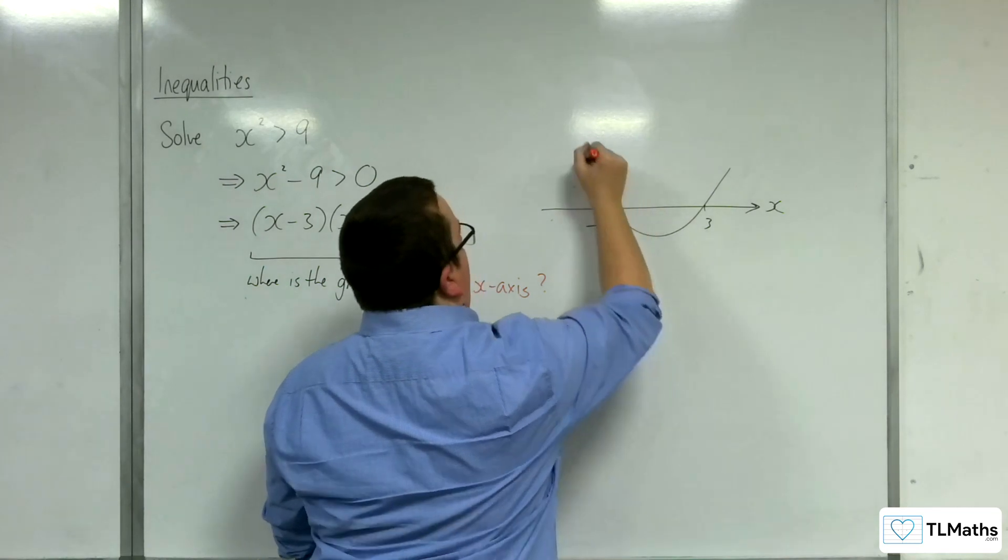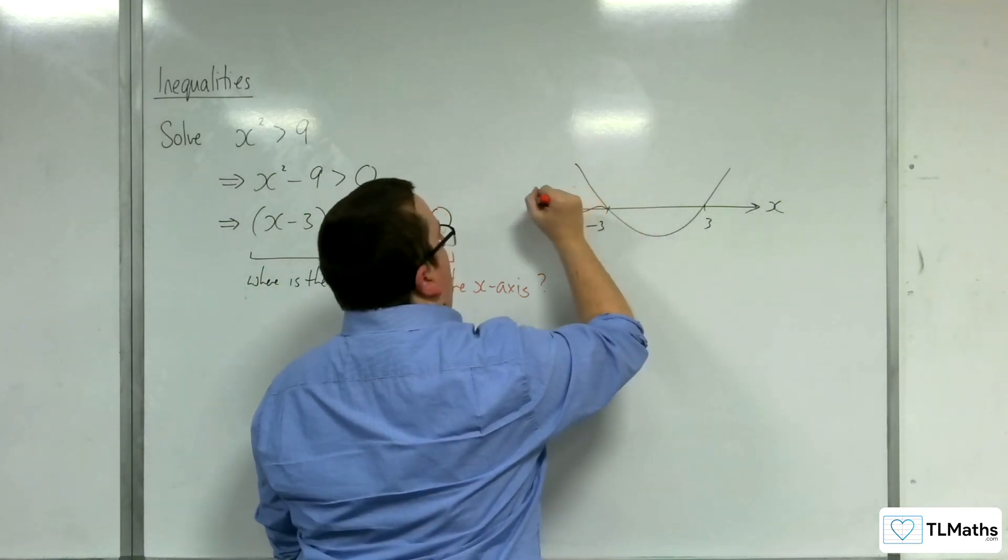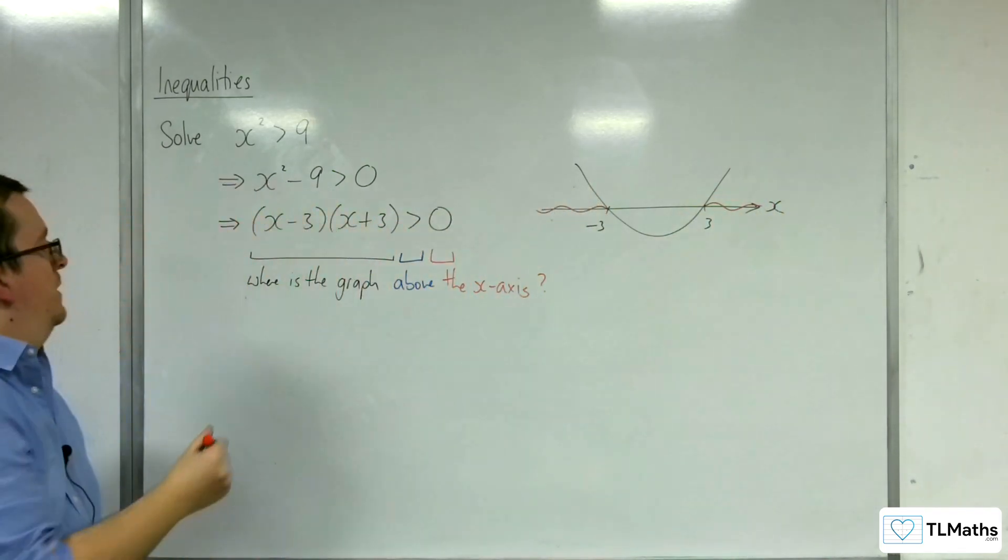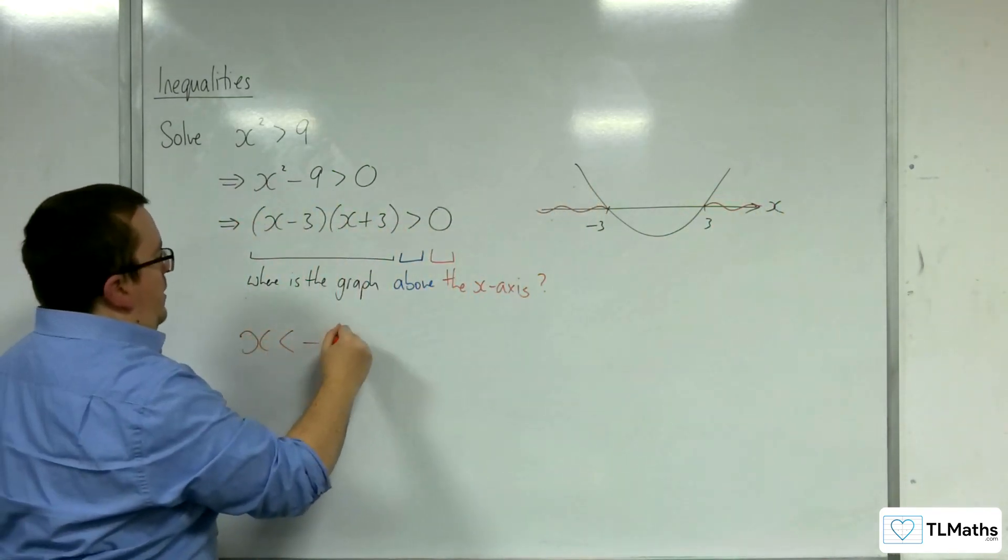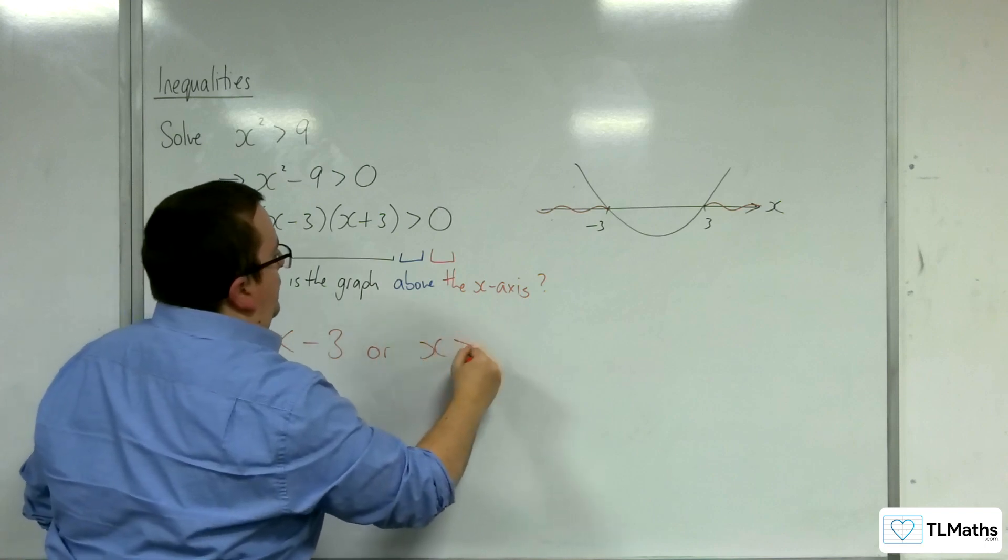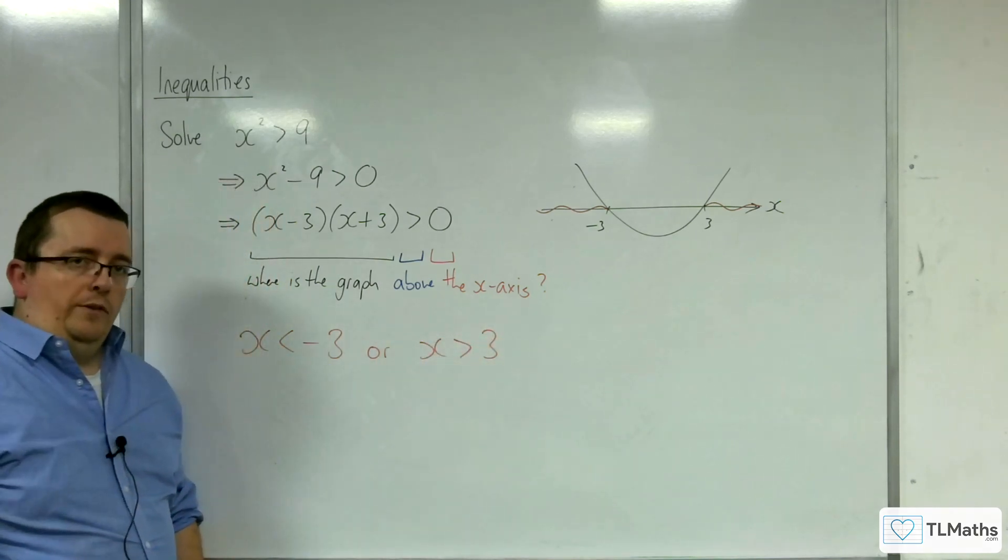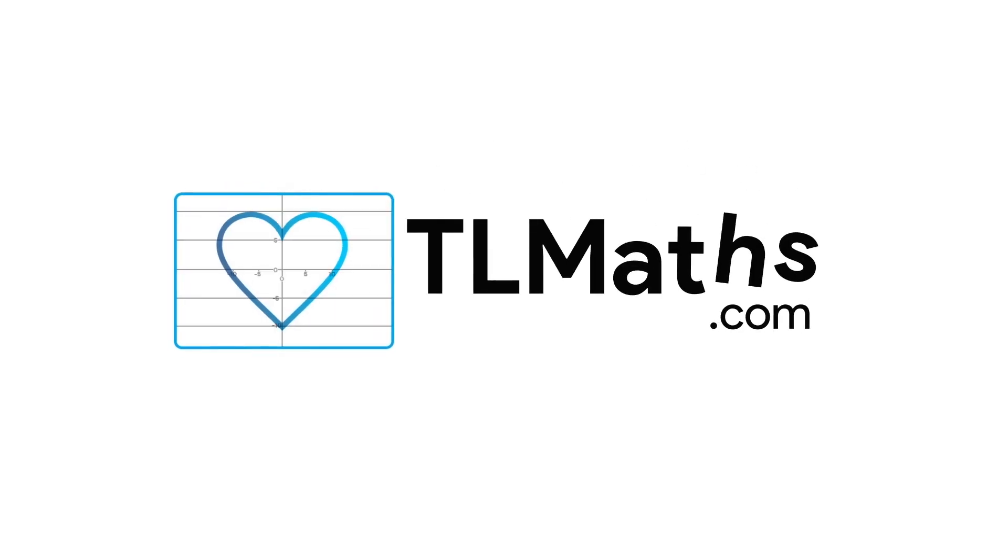Well, it's above it here when x is less than minus 3, or here when x is greater than 3. So x is less than minus 3, or x is greater than 3, is the solution to the inequality.